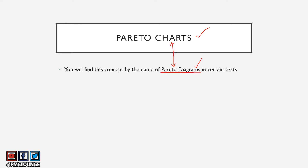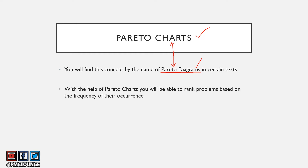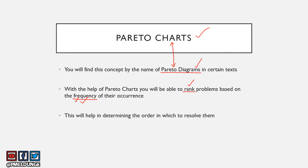As a PMP aspirant, you should know the different names of the same concept. With the help of Pareto charts, you will be able to rank problems based on the frequency of their occurrence — that is, based on the number of times a problem occurs, not based on difficulty level or scope. That is how you rank all problems, and it helps you determine the order in which to resolve them.